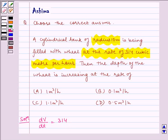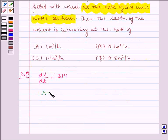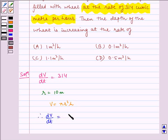The radius r is given as 10 meters. The volume of a cylinder is V equals pi r squared h. Therefore, dV/dt equals pi r squared dh/dt.